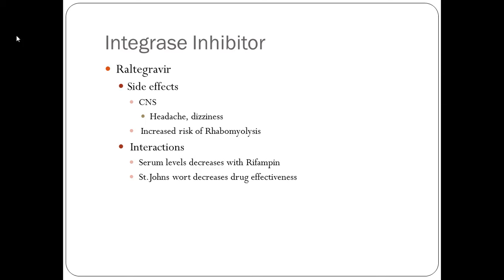Rhabdomyolysis will be discussed more in depth when we cover renal failure — the same concept as with cholesterol drugs. It involves the breakdown of muscle, with myoglobin being released and filtered by the kidneys, causing dark urine, which can lead to renal failure. Signs and symptoms of rhabdomyolysis include dark, cola-colored urine and complaints of general malaise or fatigue.